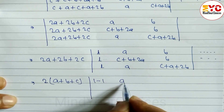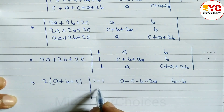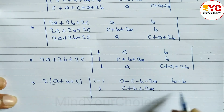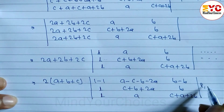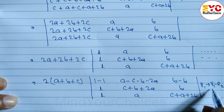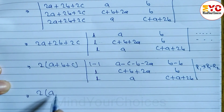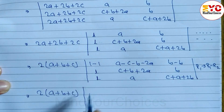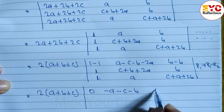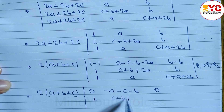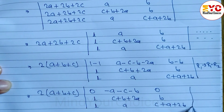Continuing with the row operation R1 → R1 − R2: we get zero in C1, then A minus (second row entry) and C minus B minus 2A in C2, and B minus B gives zero in another position. The second row remains C+B+2A with entries B, A, and the third row is C+A+2B. After R1 = R1 − R2, we get two zero elements in the first row.